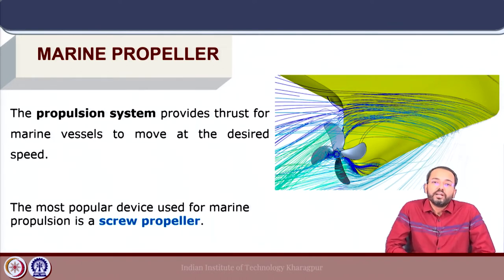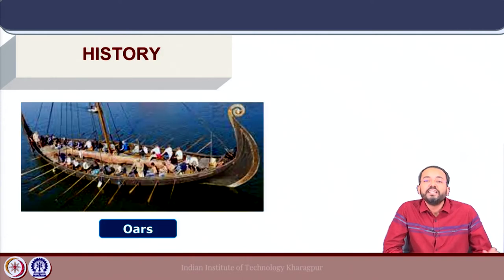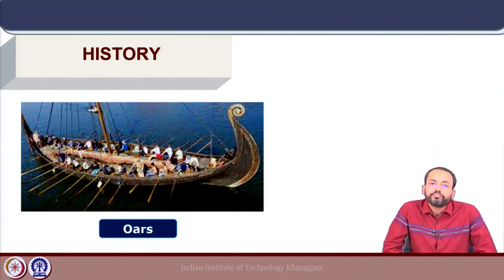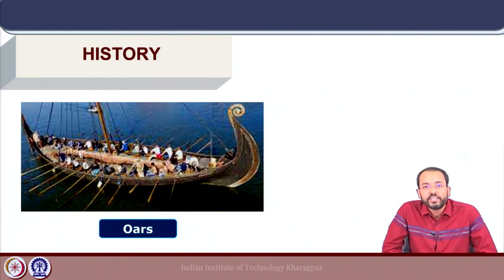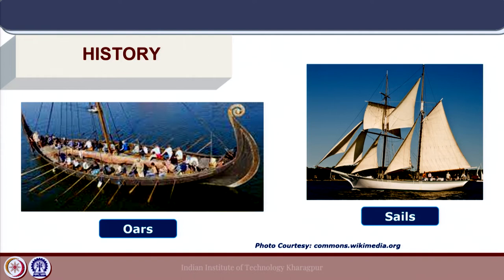Historically, the earliest forms of ships were typically made of wood and the propulsion mechanism was human powered. The earliest ships were propelled by oars, where using the oar, momentum was given to the water around the ship, providing the thrust force for the vessel to move forward. The other form of propulsion which also came into practice was the use of sails, where wind energy was converted into a thrust force which moved the vessel forward.